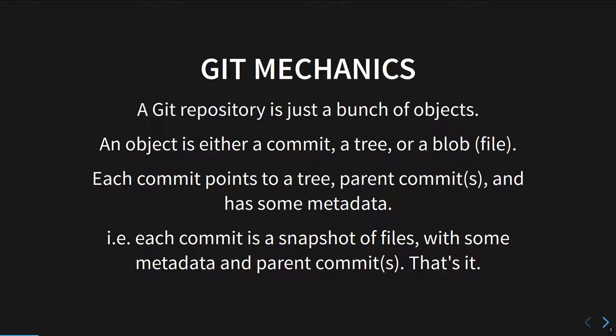Git is a snapshot-based repository. What that means is that git takes a snapshot of your entire repository every time you create a commit, as opposed to being a patch-based system where you store the differences. Git does not do that — it stores the entire repository. The differences are actually calculated on the fly when you look at a diff.